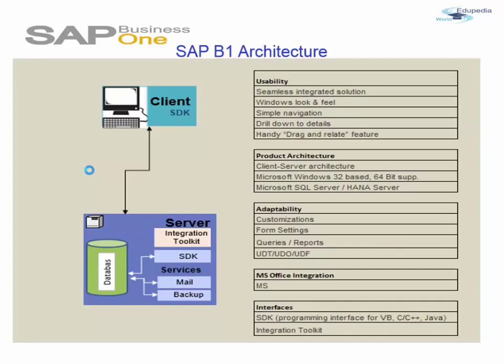In recent times, the majority of ERP systems utilize a relational data layer in a three-tier client-server architecture. The second tier is the logic or processing layer, where business logic, business processes, business rules, authentication, and user management are implemented. The third tier is the presentation layer. In a typical two-tier architecture, the server handles both application and database duties, while clients may be distributed across local and wide area links.